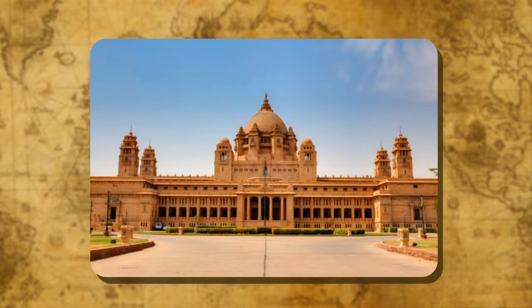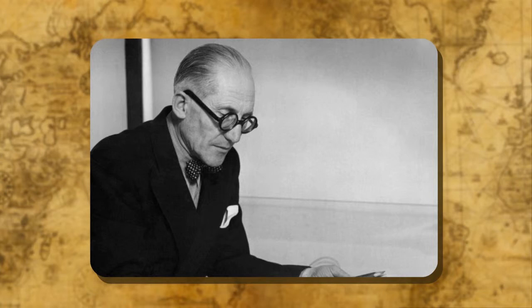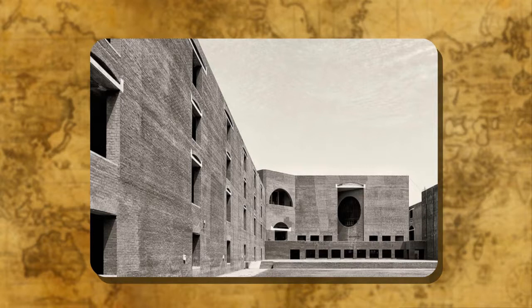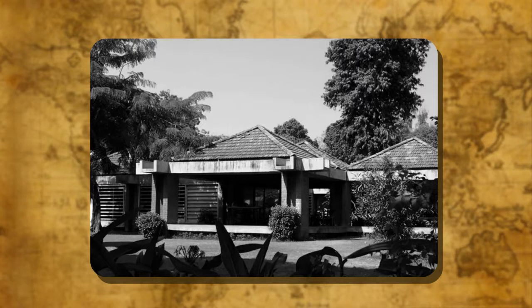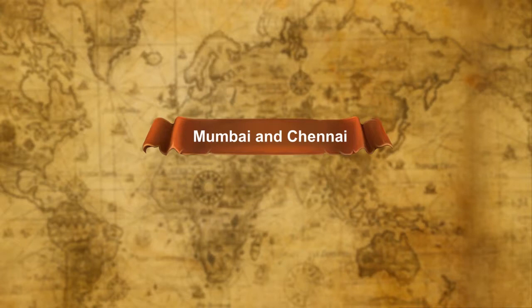After independence, projects were taken up by architects of international repute. Le Corbusier, the Swiss-born architect, contributed to the master plan of Chandigarh. The Indian Institute of Management Ahmedabad was undertaken by the American architect Louis Kahn. Charles Correa created the Gandhi Memorial Centre in Ahmedabad (1958–63) and the Jawahar Kala Kendra Complex in Jaipur (1986–91).